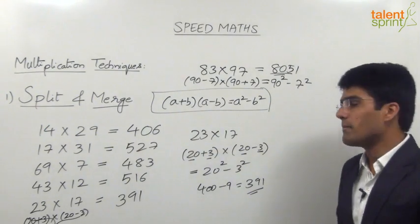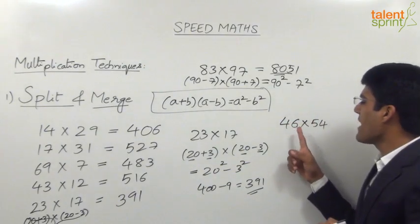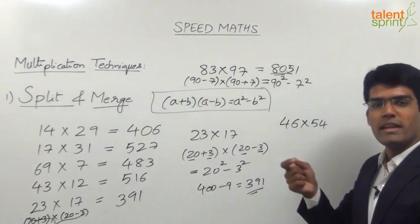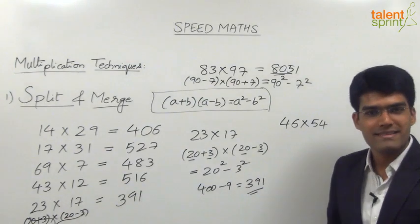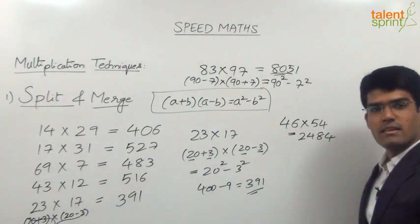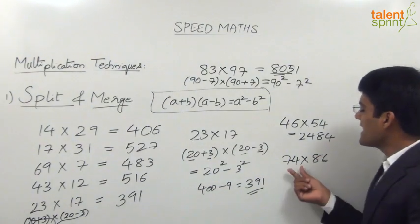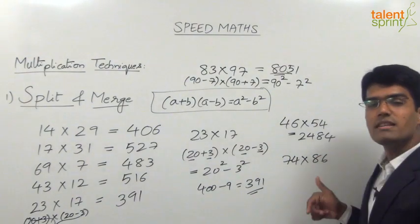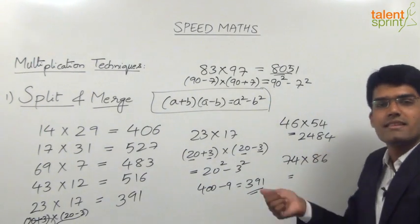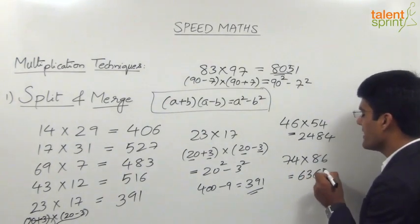Let us take a few more examples. 46 into 54: this is (50 - 4)(50 + 4), so the answer is 50² - 4² = 2,500 - 16 = 2,484. Similarly, 74 into 86 is like (80 - 6)(80 + 6), so 80² - 6² = 6,400 - 36 = 6,364.